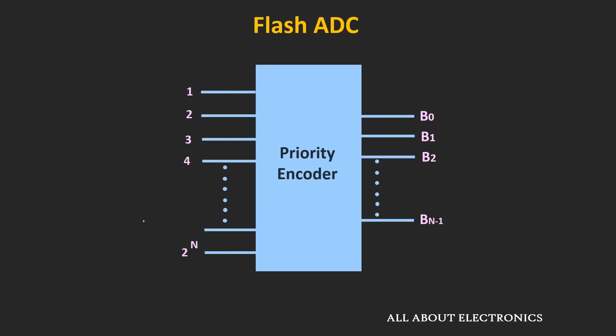To resolve that ambiguity, a priority encoder can be used. This priority encoder is a logic circuit in which if two or more inputs are high simultaneously, it gives the output code corresponding to the highest priority input. This priority can be assigned in either ascending or descending order. For example, if the priority is set such that the first input has the least priority and the 2 to the power n-th input has the highest priority, and if inputs 1, 2 and 3 are high simultaneously, then the encoder gives the output binary code corresponding to the third input.